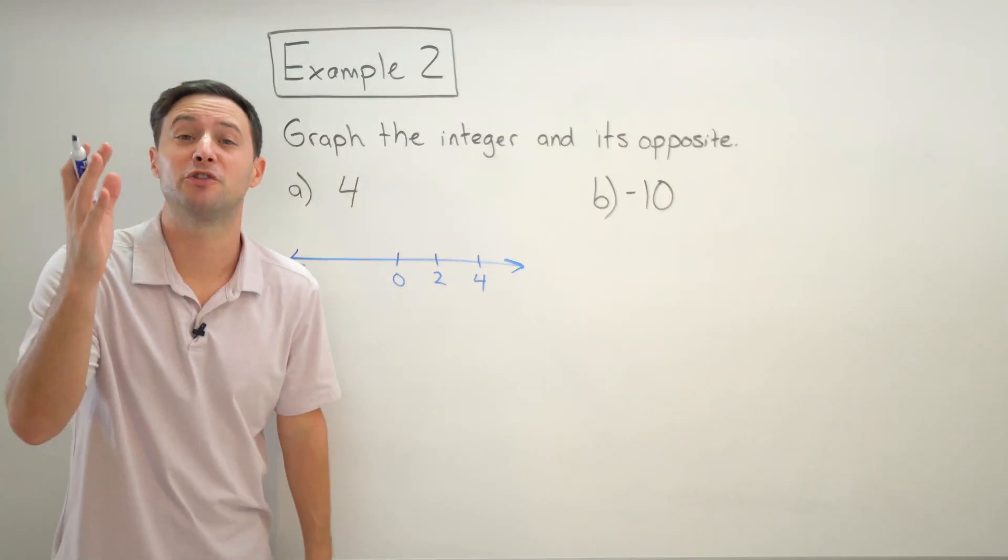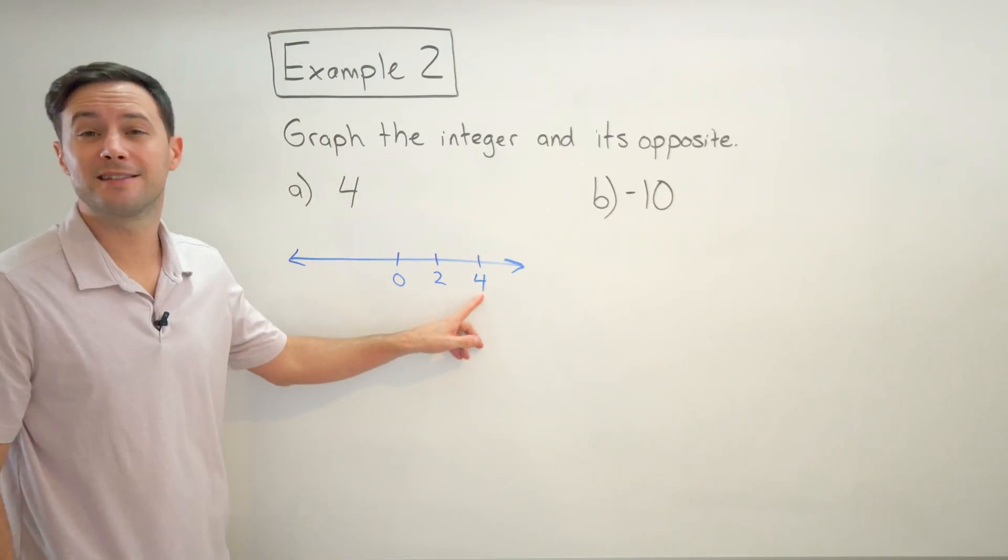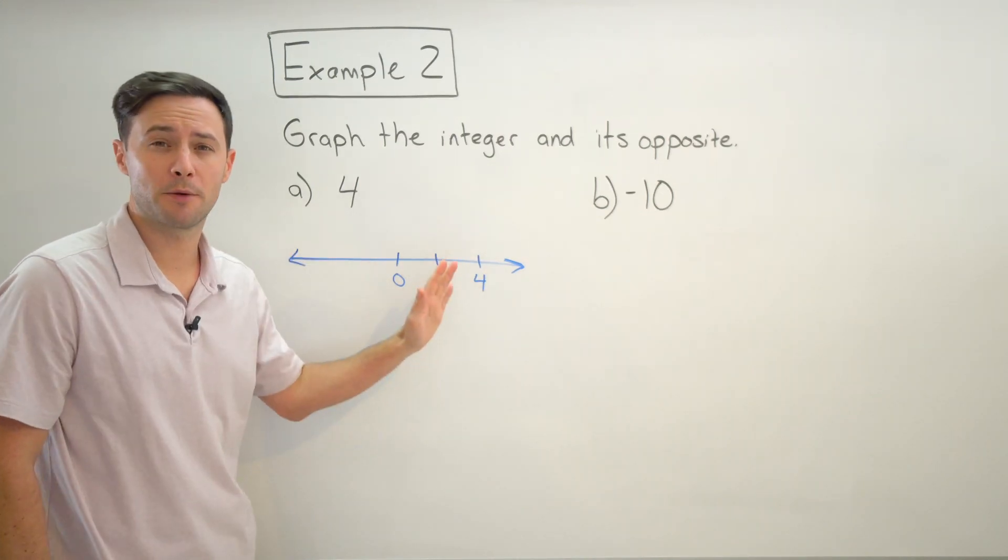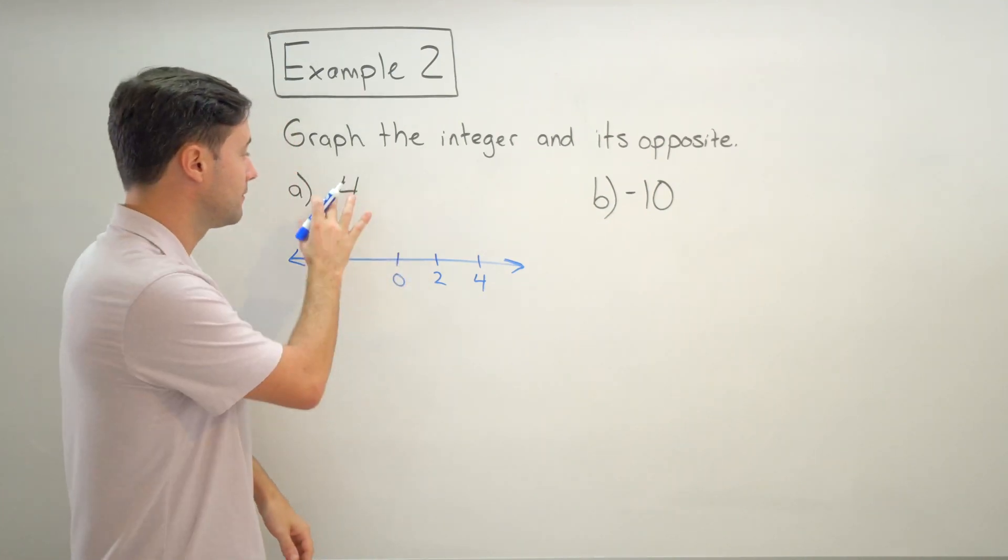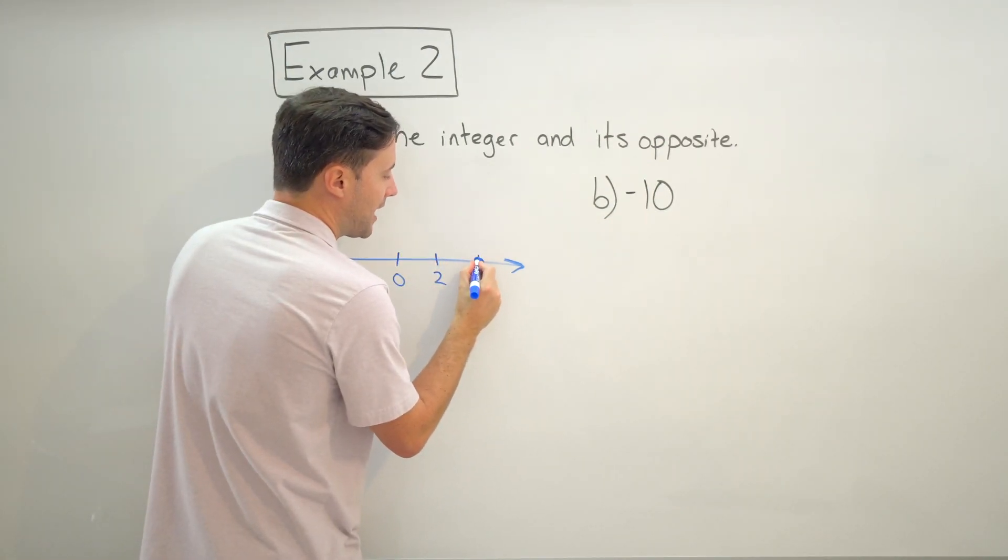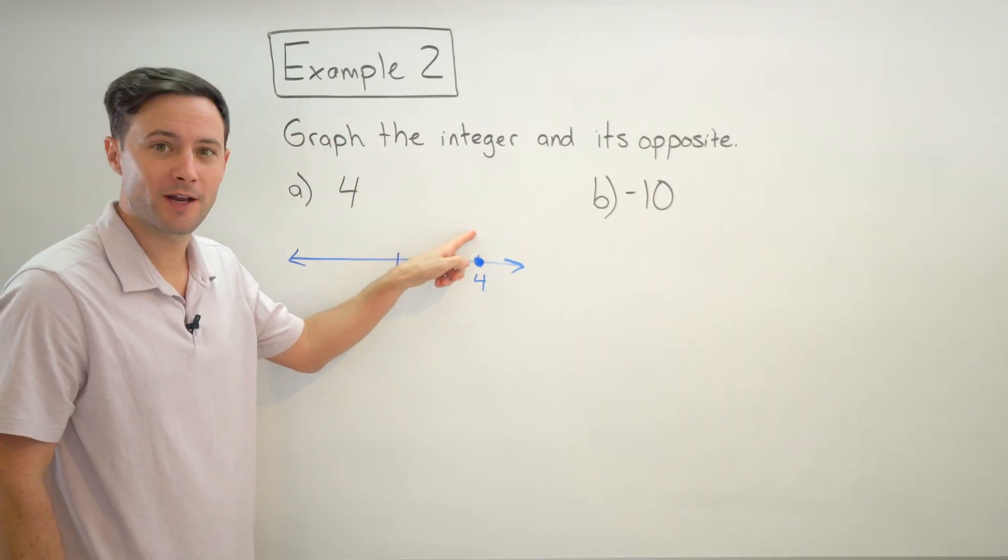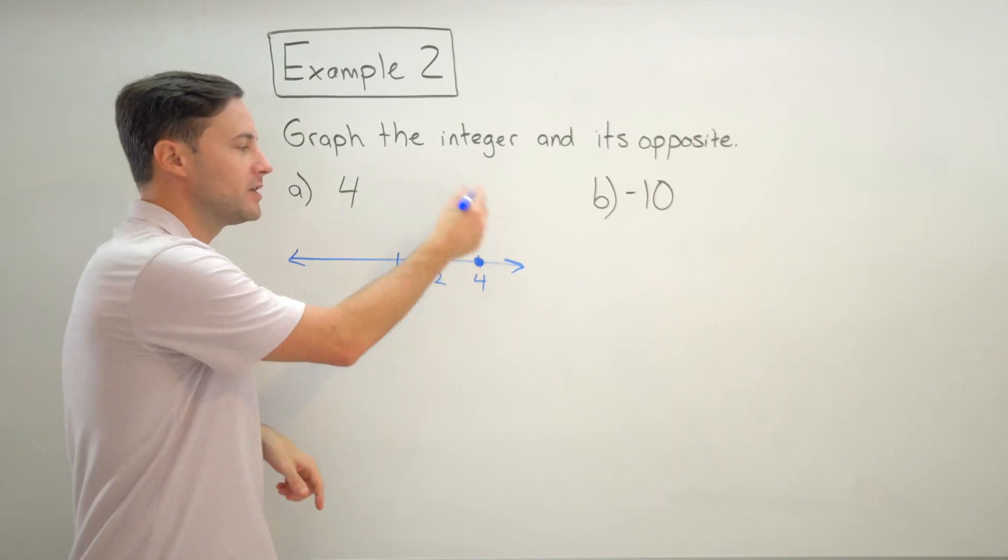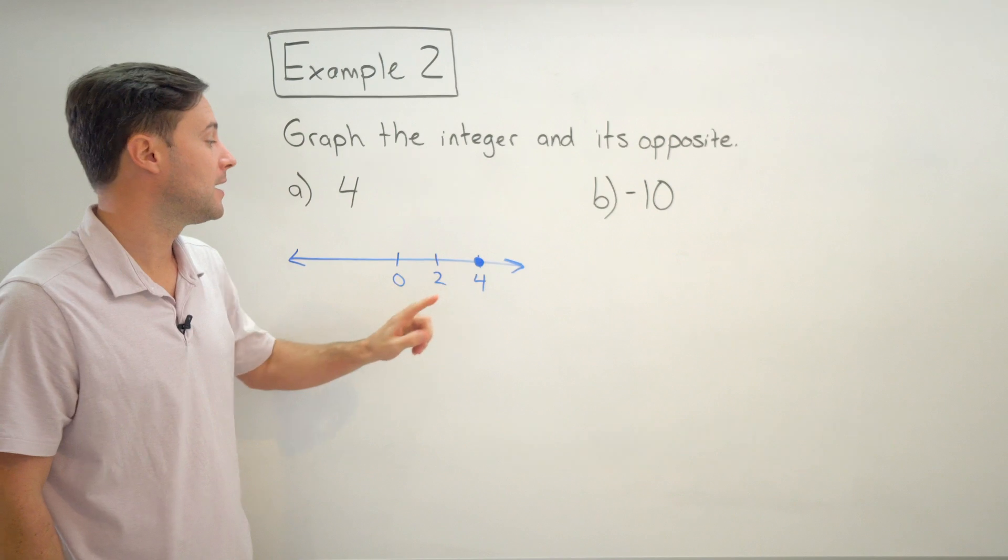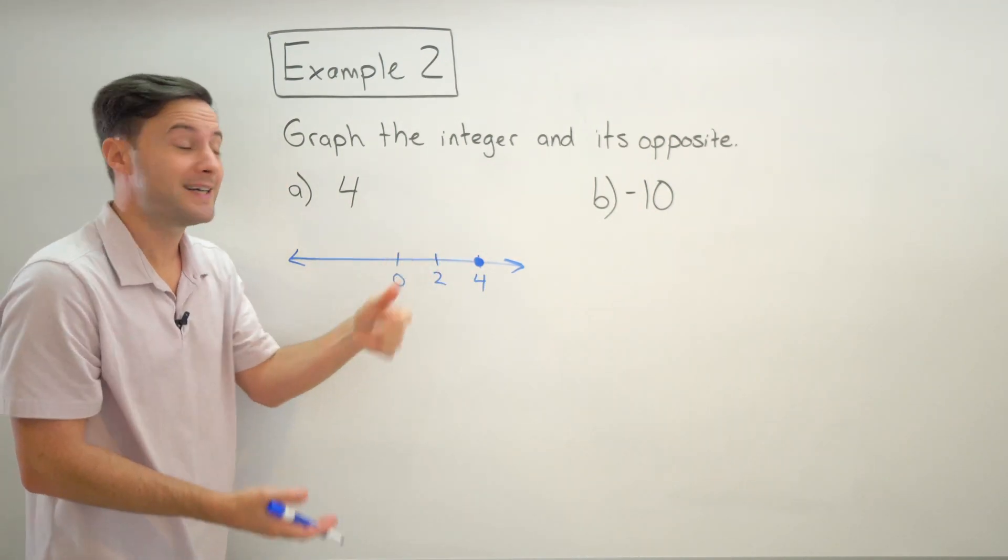Okay, so now it's time to actually graph it. So if I want to graph four, this is labeled - this isn't, nothing has been graphed yet. There is no integer that's been graphed on this number line. To actually graph the four, I actually put a point, I put a dot, I fill it in right on the number line. Don't put it above the number line, don't put it below, don't do any circles or anything like that. You put a point on there and make sure it's labeled, which it already is.